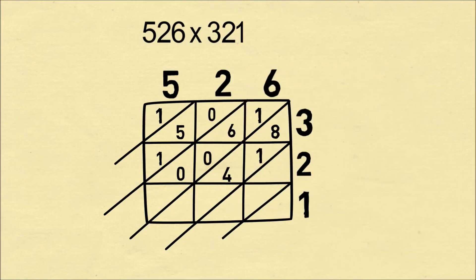The great part about lattice multiplication is you only have to know how to multiply simple things, your times table up to 9, because that's how you can solve for each box.